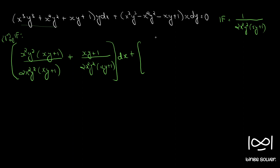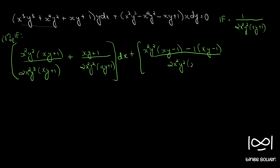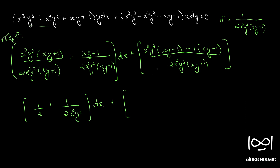If we take x²y² common we have (xy - 1), and if we take minus 1 common we have (xy - 1), giving 1/[2x²y²(xy + 1)]. To simplify, the 2 gets partially cancelled — we have 1/2 plus 1/(2x²y²) dx, plus the N terms.